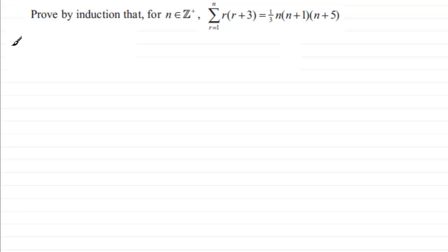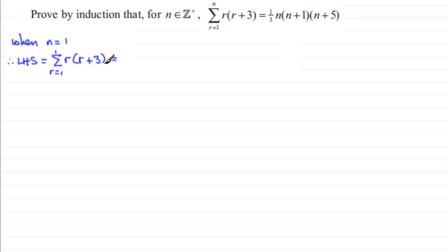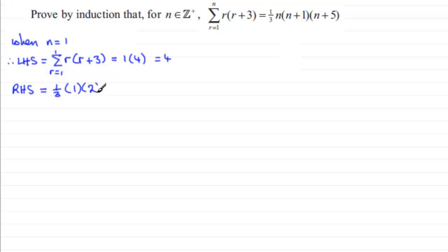With induction, we first show it's true when n equals 1. Taking the left hand side, the sum of r multiplied by r plus 3 from r equals 1 to 1 is just 1 multiplied by 4, which equals 4. Taking the right hand side, substituting n equals 1 gives a third times 1 times 2 times 6, which also equals 4.